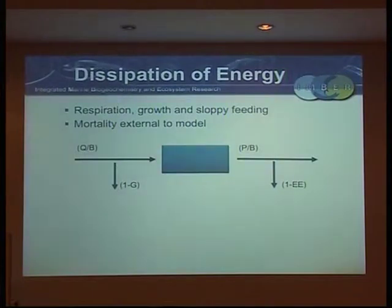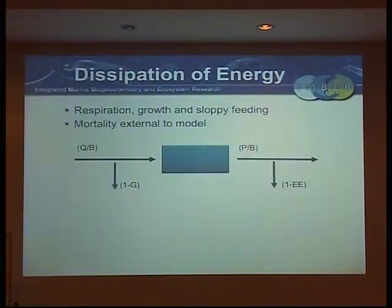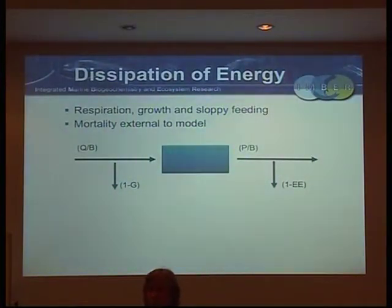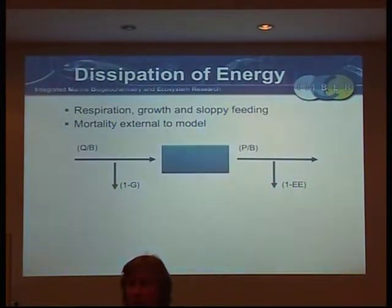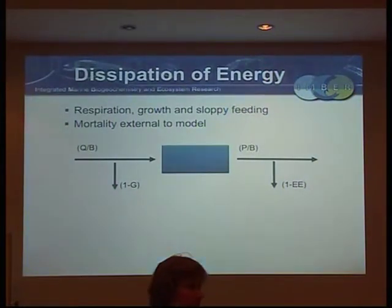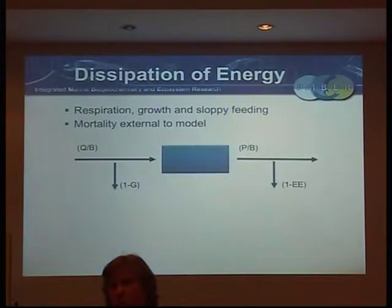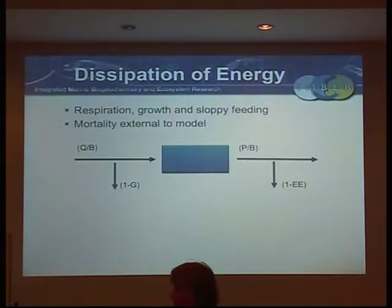If you think about how biomass can dissipate through the system - you have the respiration side of things, the unassimilated food side of things, and you also have this eating. There was another source of controversy: ecotrophic efficiency - how much of the production of that animal is used within the system. Really it's just a fitting parameter. It's saying this proportion of that animal's production I don't cover in this model. Most of the time an experienced modeller will let the model solve for EE as its unspecified term in the simultaneous equation.